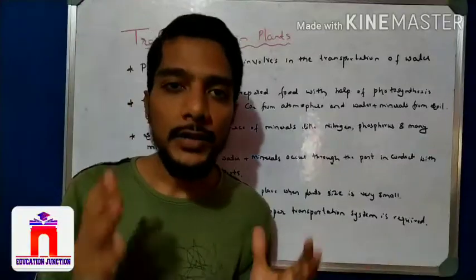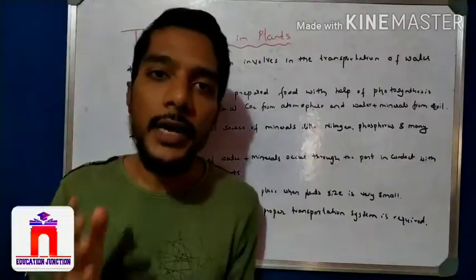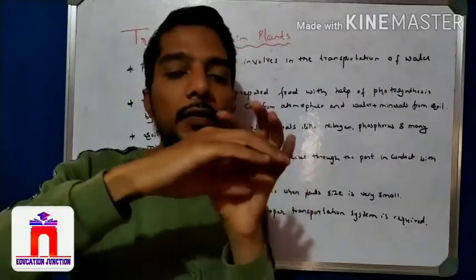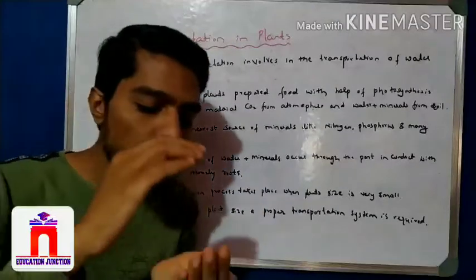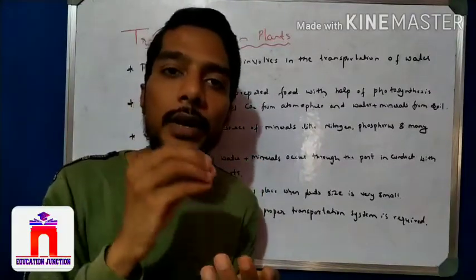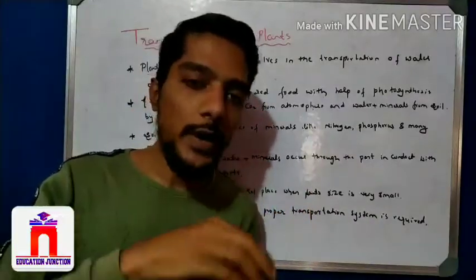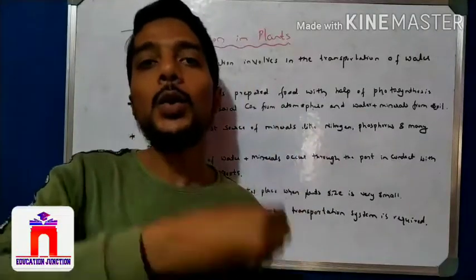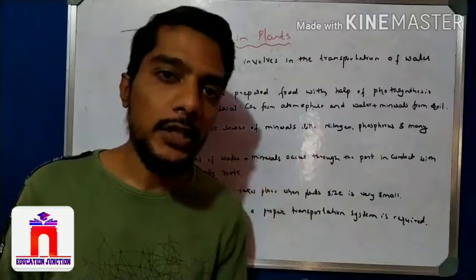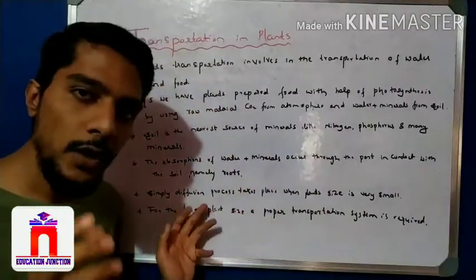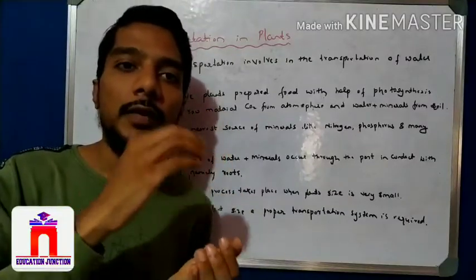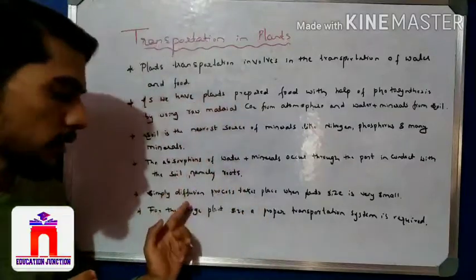There are two types of plants: small plants and big trees. In small plants, the distance between the root and the leaf is very small. In such small plants, the diffusion process easily takes place — from higher concentration to lower concentration. In the soil, the concentration of water is more, and inside the plant is less, so absorption takes place from soil to root and root to the plant. In small plants, the transportation system is done by the simple diffusion process.